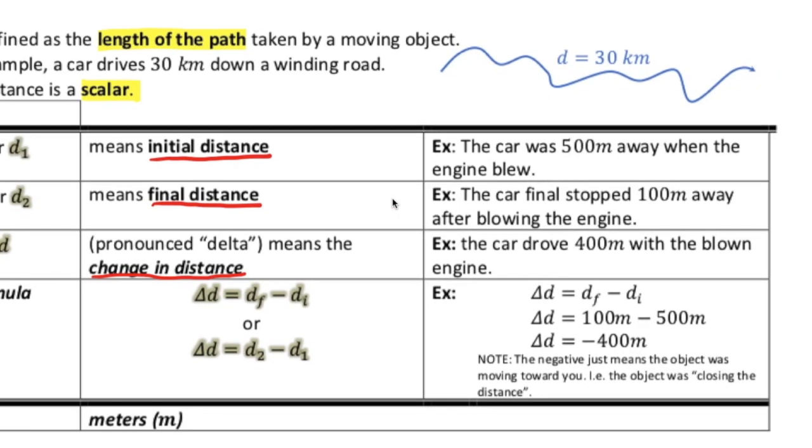So let's say, for example, the car was driving 500 meters away from us when the engine blew. That's what I mean by 500 meters away. It's 500 meters away from the observer. So the car was 500 meters away when the engine blew.